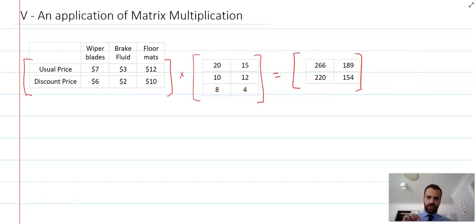We're going to be talking about Super Cheap Autos, a place that sells car stuff. The usual price of their wiper blades is seven dollars, brake fluid three dollars, floor mats twelve dollars.